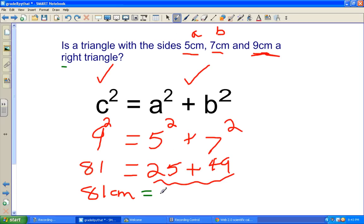So we'll put our equals 74 centimeters. And it does not equal the same. I'll put a nice symbol down there because it does not equal 74 centimeters. So it is not a right triangle.